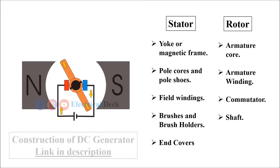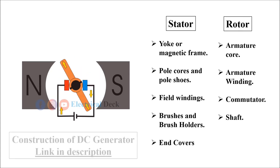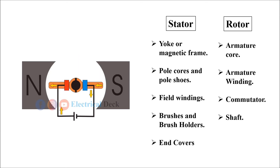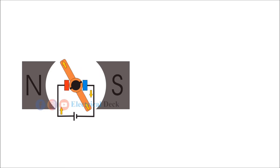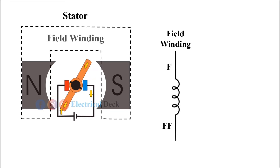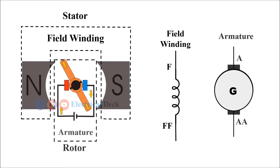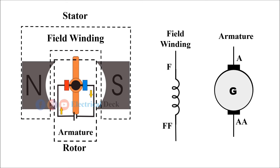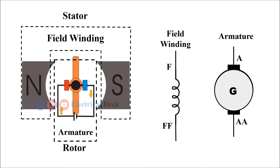You can check out the detailed construction of DC generator in the link given in the description. Now, we know that DC generator consists of two windings: field winding, which is a part of the stator, and armature winding, which is a part of the rotor. Depending upon how these two windings are connected, there are various types of DC generators.